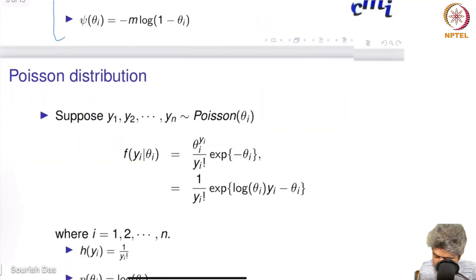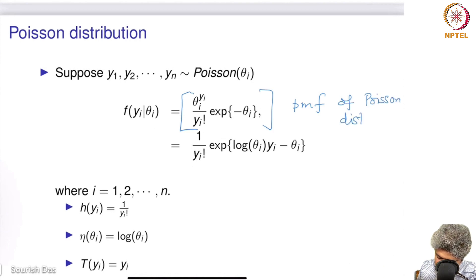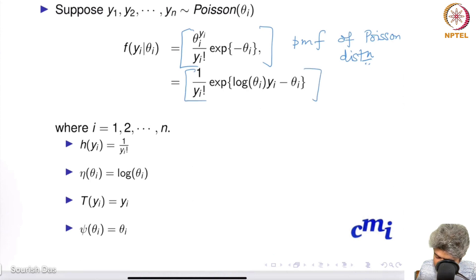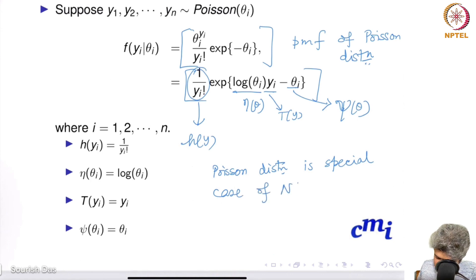Similarly, for the Poisson distribution, we can write its PMF in the Natural Exponential Family format. Here, log(θ) is η(θ), yi is t(y), θ is ψ(θ), and 1/y! is h(y). Therefore, the Poisson distribution is a special case of the Natural Exponential Family.